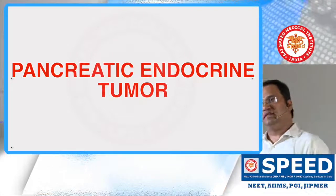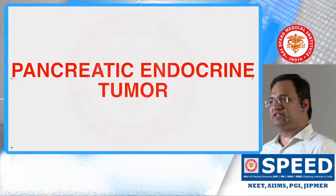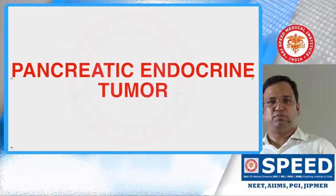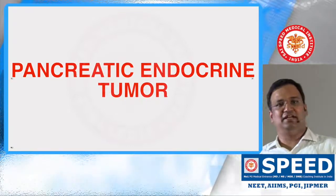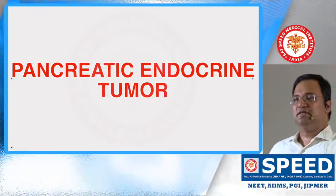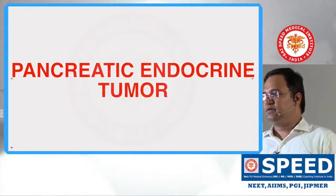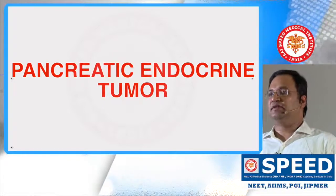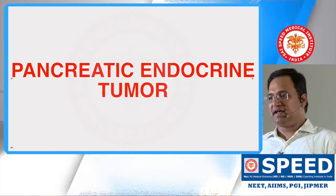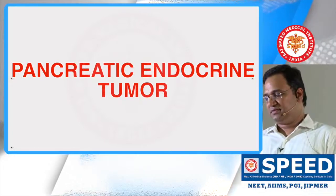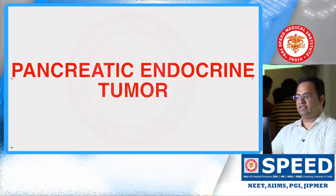The gastrinoma triangle is drawn by taking three points. The first point is the junction of the cystic duct and common hepatic duct. The second point is between the second and third part of the duodenum. The third point is the junction of the body and neck of the pancreas.